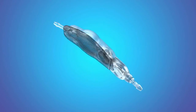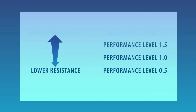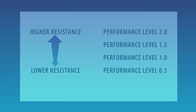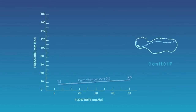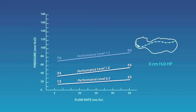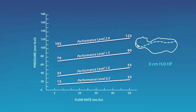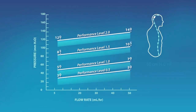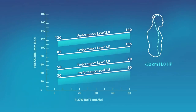The Delta Valve has four performance levels which directly correlate to the valve pressure flow rates. The valve performance levels are 0.5, 1.0, 1.5, and 2.0. These numerical descriptions are synonymous with the valve pressure ranges from a lower to a higher resistance valve. As shown by the performance level chart, the Delta Valve system maintains a consistent pressure gradient regardless of the flow rate or patient posture.